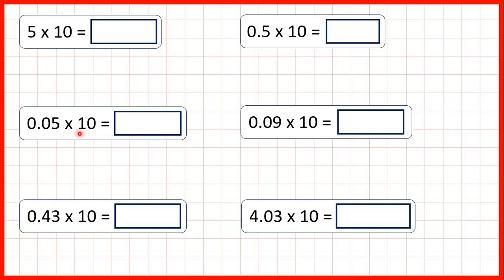In these questions we're going to multiply decimals with hundredths by 10. But first let's look at 5 times 10. You probably already know that the answer is 50, and you might have been taught that you can multiply whole numbers by 10 by just putting a zero on the end. That works for whole numbers, but it doesn't work for decimals. So let's use the same method that we're going to use to multiply decimals.